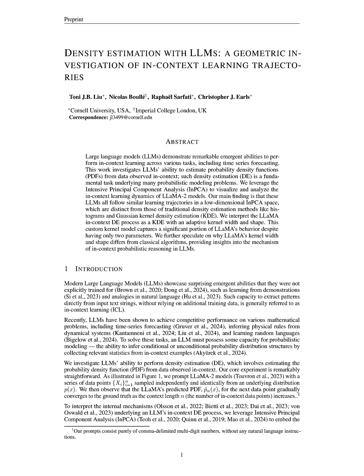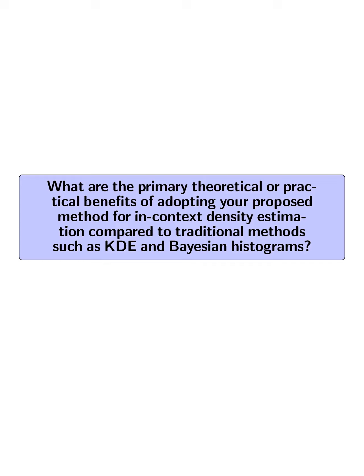Finally, as more in-context data points are provided, the estimated PDF, hat p_n(x), converges to the ground truth, px, illustrating the model's ability to learn from the data. What are the primary theoretical or practical benefits of adopting your proposed method for in-context density estimation, compared to traditional methods such as KDE and Bayesian histograms?